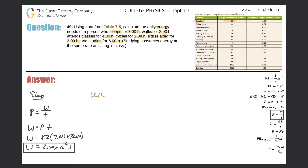Walking for two hours: work equals power times time. Walking at 5 kilometers per hour requires 280 watts of power. So this is 280 multiplied by two hours times 3,600. The work for walking works out to be 2.02 times 10 raised to the sixth joules.